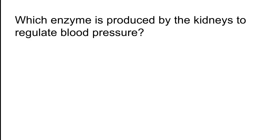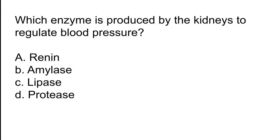Which enzyme is produced by the kidneys to regulate blood pressure? Options: A) Renin, B) Amylase, C) Lipase, D) Protease. The correct answer is option A. Renin is the enzyme produced by the kidneys to regulate blood pressure.